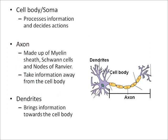The cell body, also called the soma, processes information and decides actions. The axon is made up of the myelin sheath, Schwann cells, and nodes of Ranvier, and takes information away from the cell body. Dendrites bring information towards the cell body. There is a picture showing the makeup of a neuron.